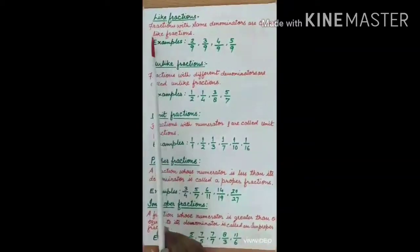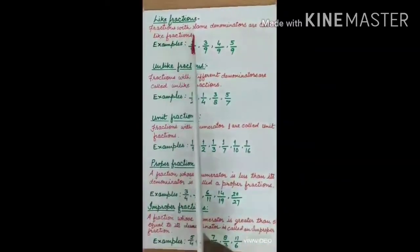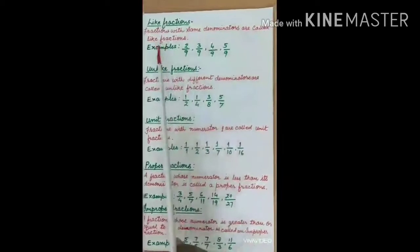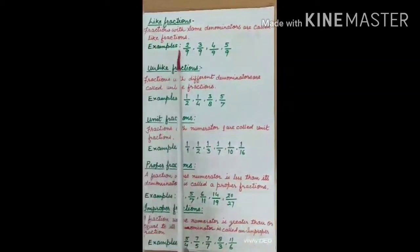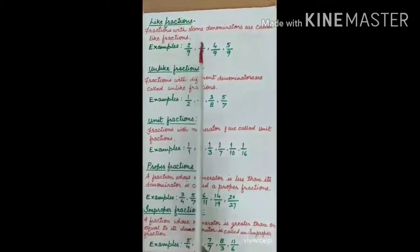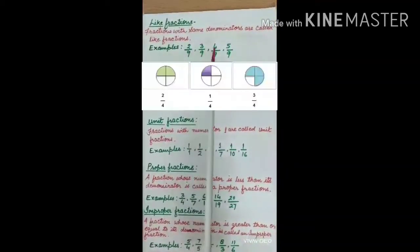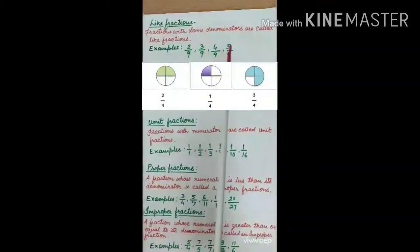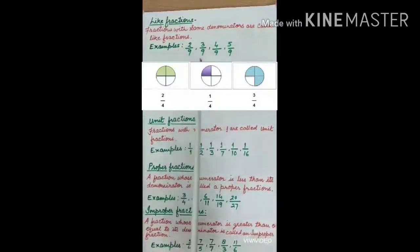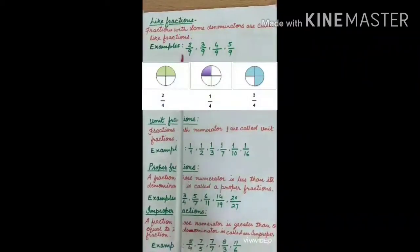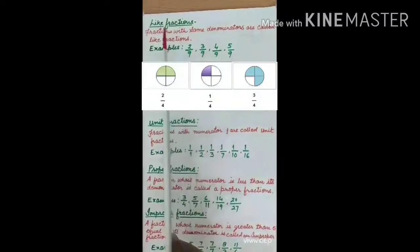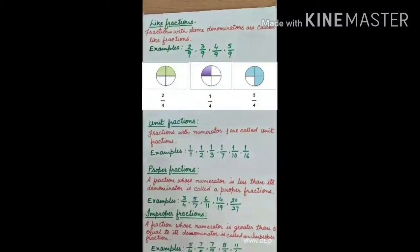Like fractions: fractions with the same denominators are called like fractions. For example, 2 upon 9, 3 upon 9, 4 upon 9, and 5 upon 9. In all these examples, the denominator is the same, so these are like fractions.